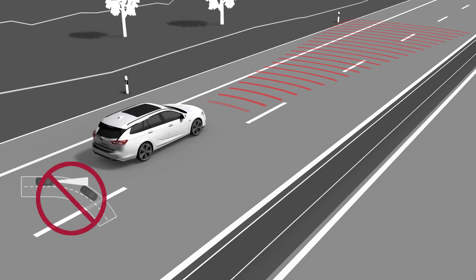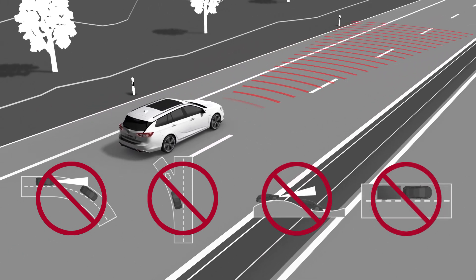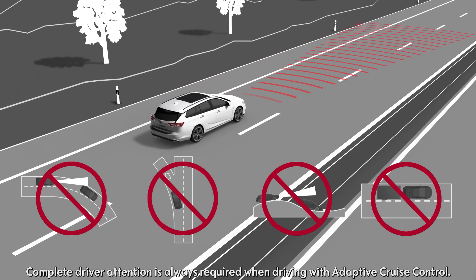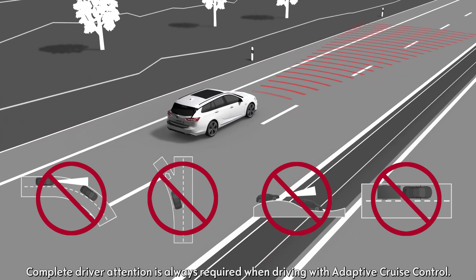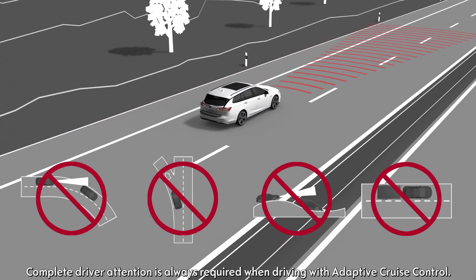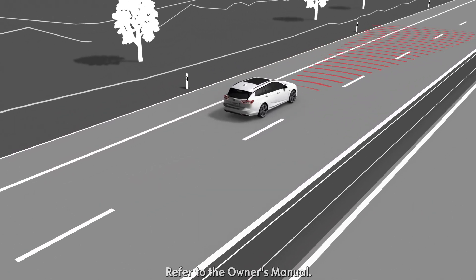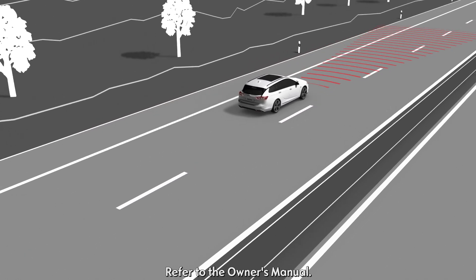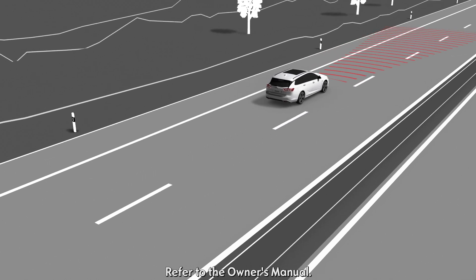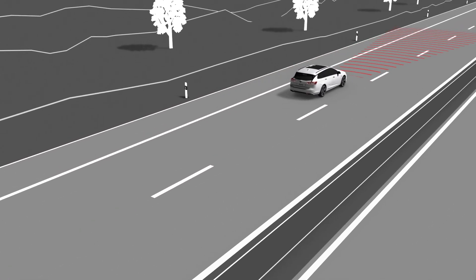Adaptive cruise control is best used on long straight roads like highways or country roads with steady traffic. In certain driving situations such as winding roads, system limitations may apply. The functionality of ACC may also be affected by other conditions like snow or ice. For more information, please refer to the owner's manual. Have a safe and relaxing drive.